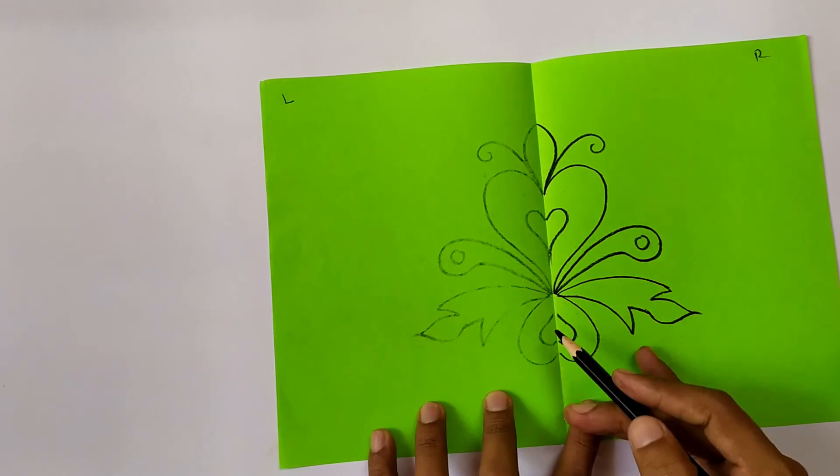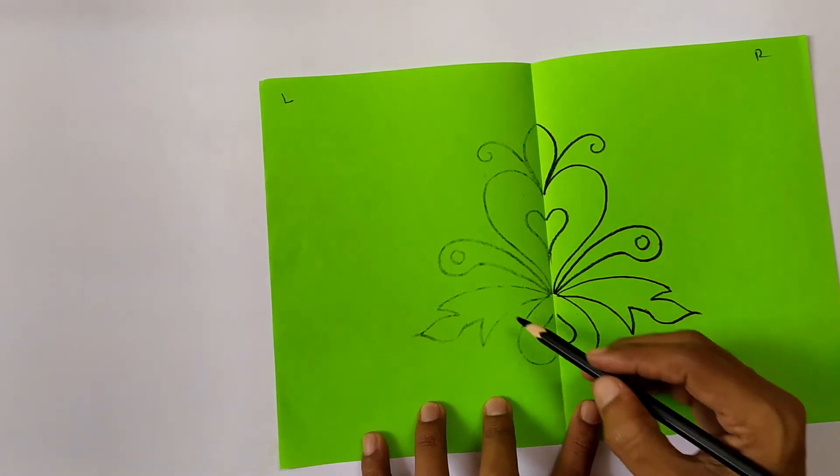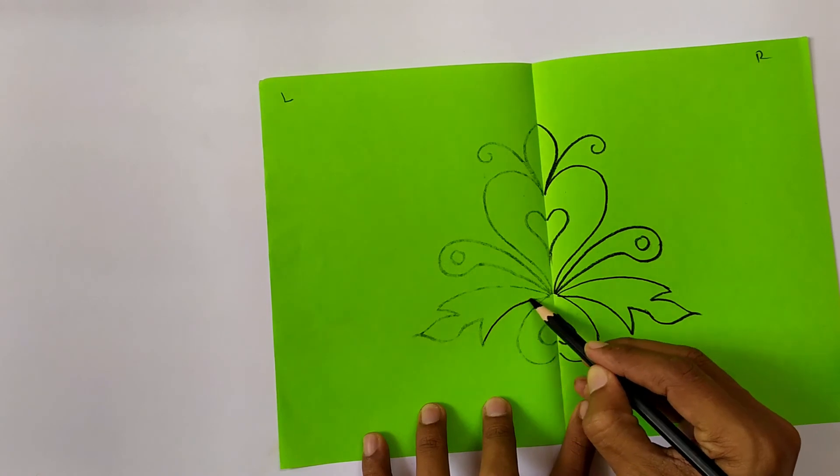See, you got the same press, this side right, exactly symmetry. Now we need to make it dark by using the pencil.